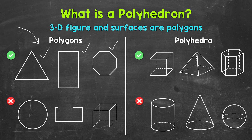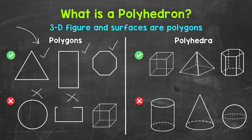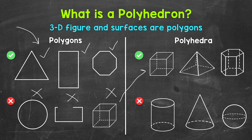Now for some examples that are not polygons. A circle is not a polygon — a circle is curved, it doesn't have straight sides, it's not made of line segments. In the middle we have an open figure, so that's not a polygon. And then lastly we have a cube. A cube is three-dimensional, and polygons have to be two-dimensional — they are plane figures, so flat. A cube isn't a polygon, but it is a polyhedron.